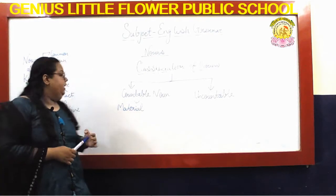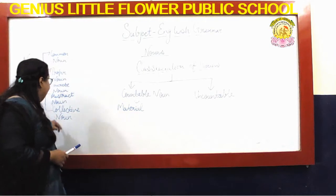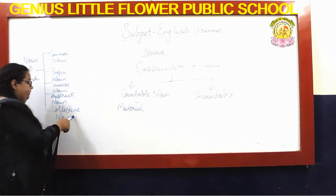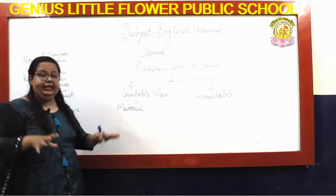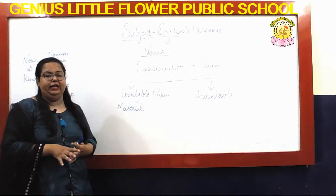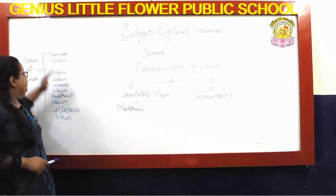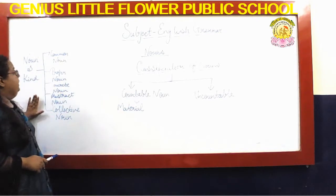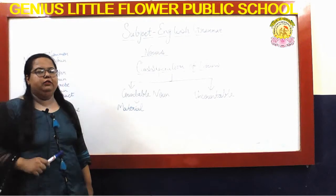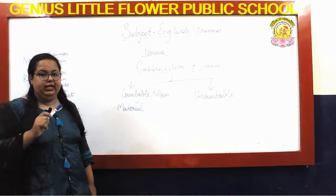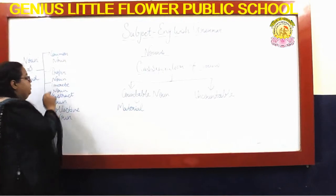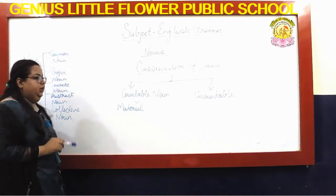Abstract nouns are things you can't touch but can only feel — they represent feelings. Collective noun means to collect — to speak as a group. To remember which kinds of nouns there are, here is a simple scenario for you.